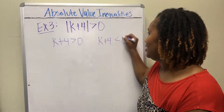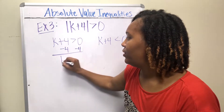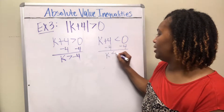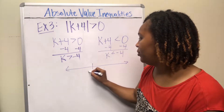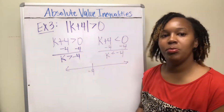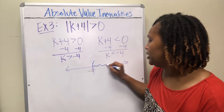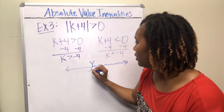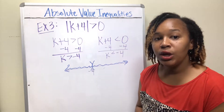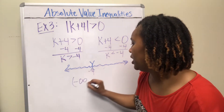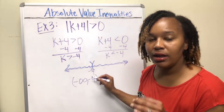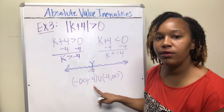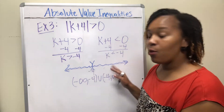Solving each: subtract 4 to get k > −4 for the first, and k < −4 for the second. On the number line, everything bigger than −4 is shaded right with a parenthesis, and everything less than −4 is shaded left with a parenthesis. The solution in interval notation is (−∞, −4) ∪ (−4, ∞), which means all real numbers except −4.